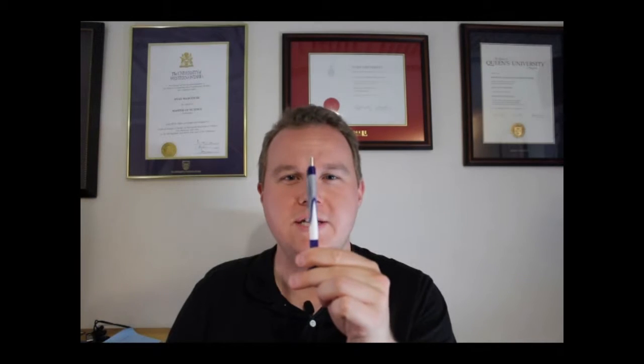To measure the distances to planets and stars, we use something called parallax. To understand how parallax works, take a pen. Hold it pretty close to your face and close one eye. Now, if you switch eyes back and forth, the pen actually appears to move a little bit against the background. That's because our eyes are separated — they're not in the same spot, and we have two of them.